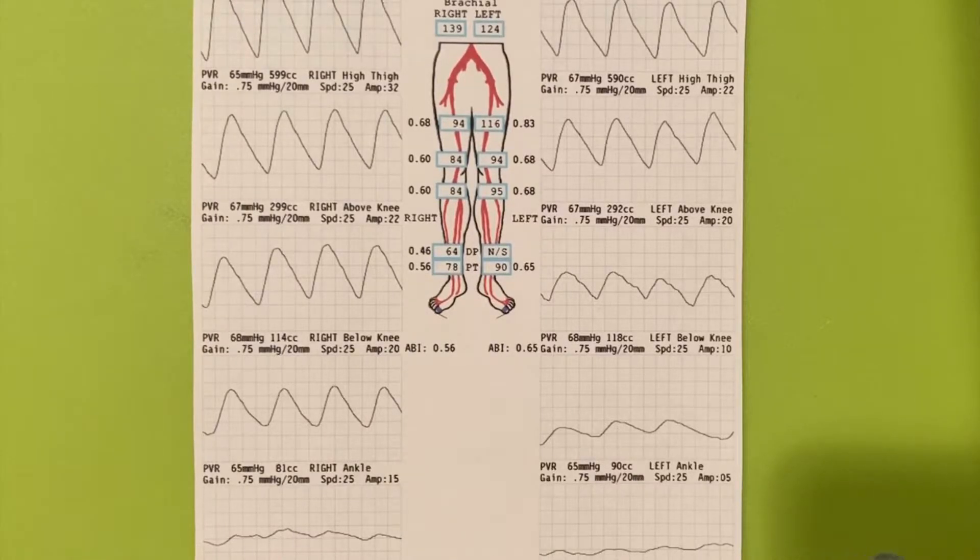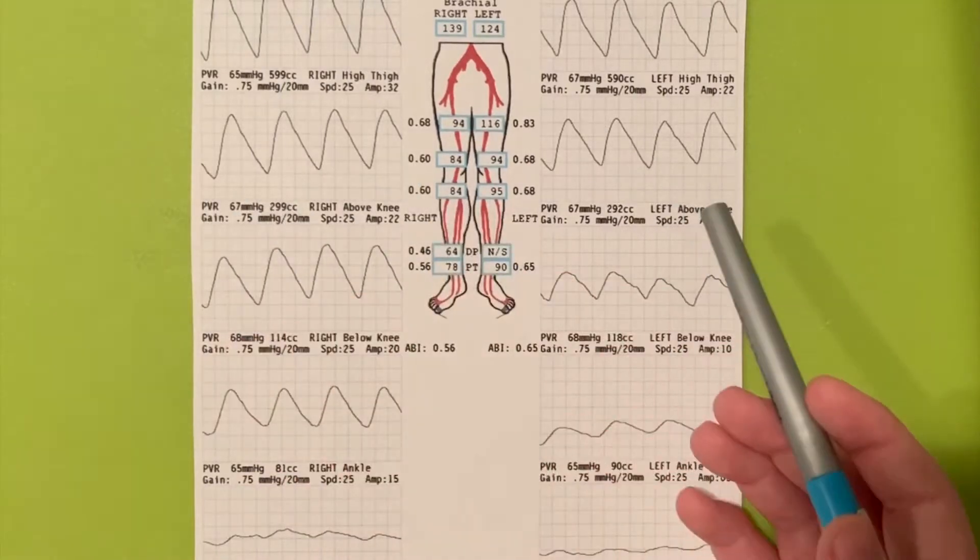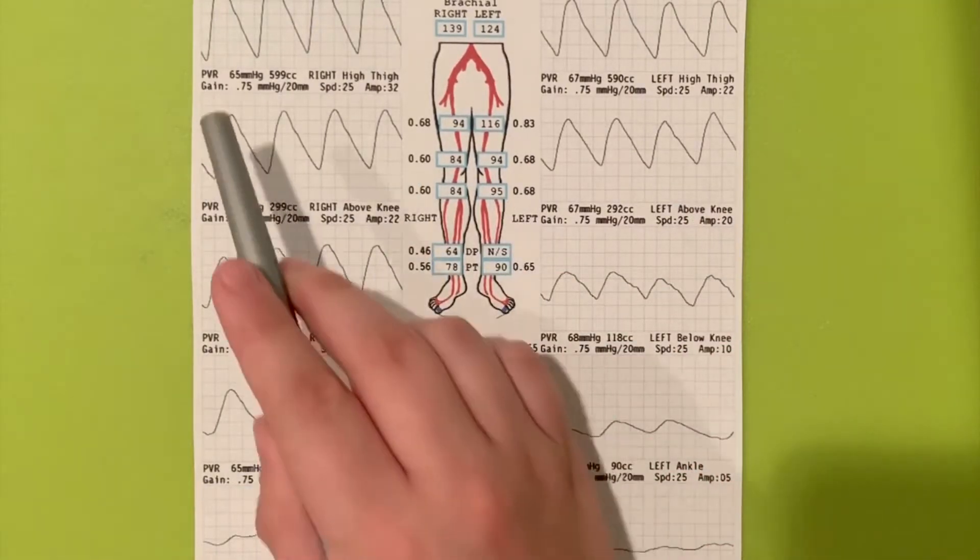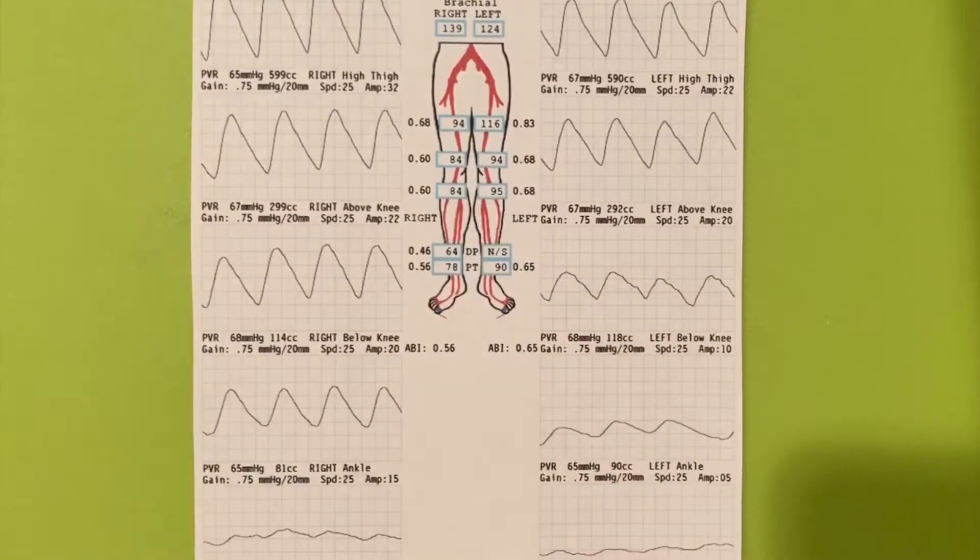Once everything is completed, a worksheet will be created and sent electronically to the PACS system. The worksheet will look something like this. It shows the PVR recordings and the pressures for each segment. We will use this example case study to interpret.